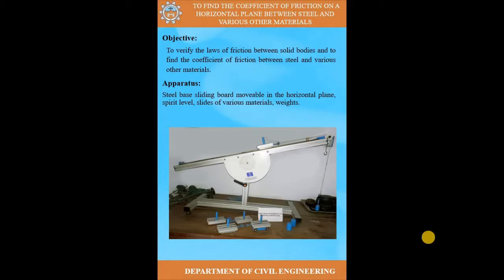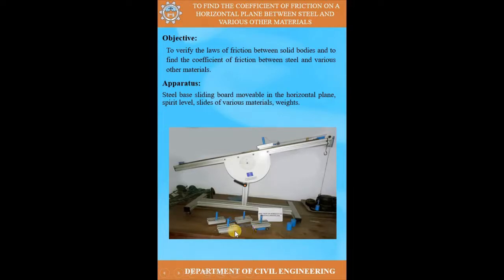The apparatus used in this experiment includes a steel base sliding board — movable and horizontal — and a spirit level. There is also a protractor disc which gives the inclination angle, and sliders of various materials. These sliders have different base materials such as wood, steel, brass, and rubber, so we can determine the coefficient of friction for different kinds of materials. Some weights will also be used in this experiment.